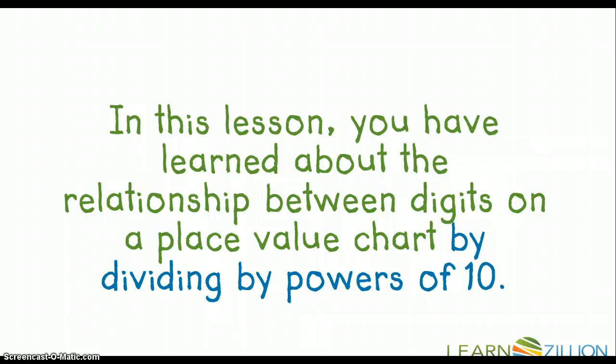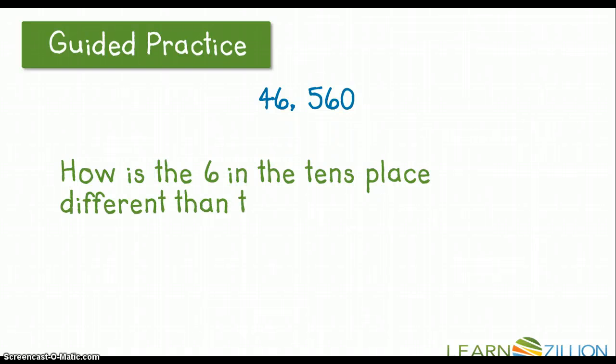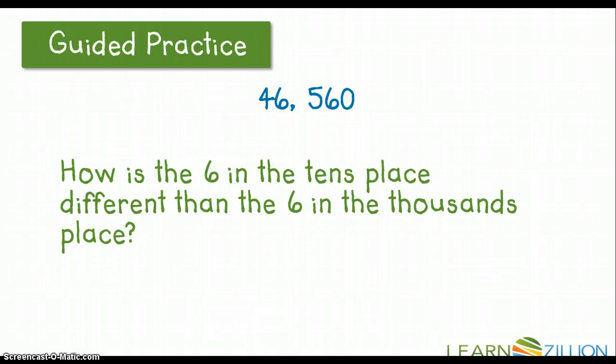In this lesson, you have learned about the relationship between digits on a place value chart by dividing by powers of 10. Let's take a look at some guided practice. In the number 46,560, how is the 6 in the tens place different than the 6 in the thousands place? Remember that the 6 in the thousands place is worth 6,000 and the 6 in the tens place is worth 60.